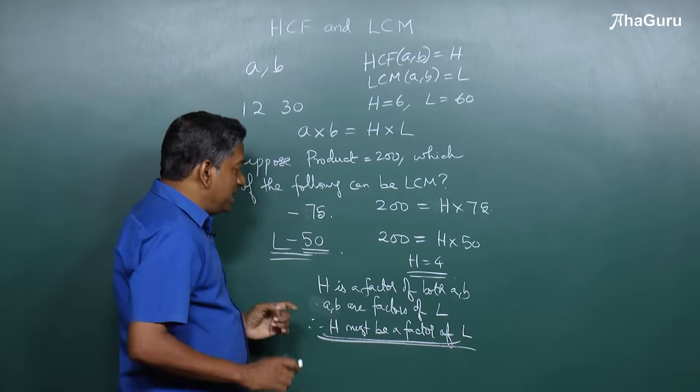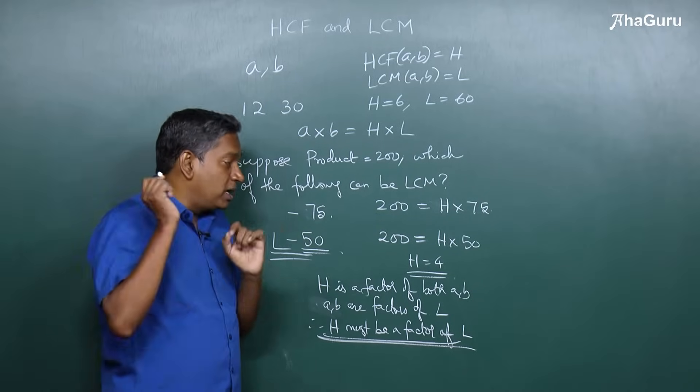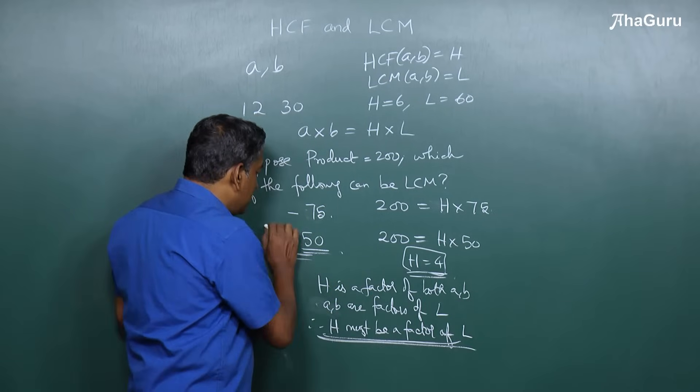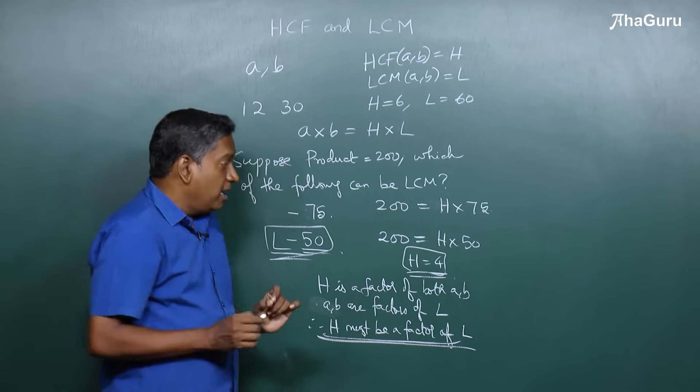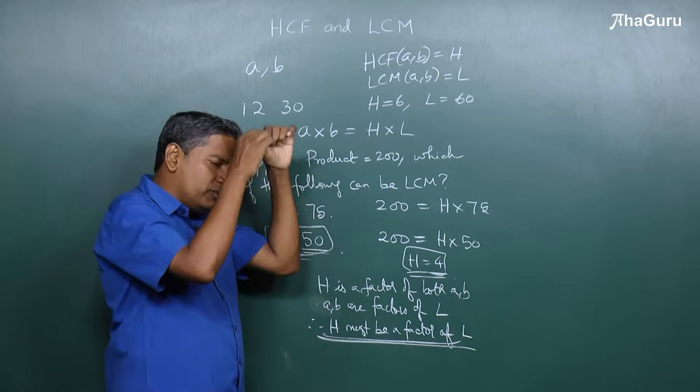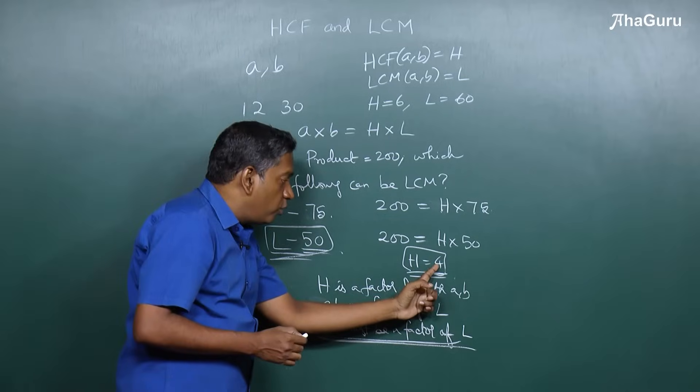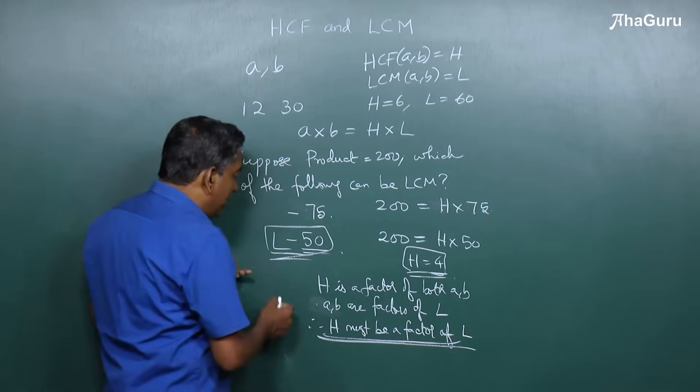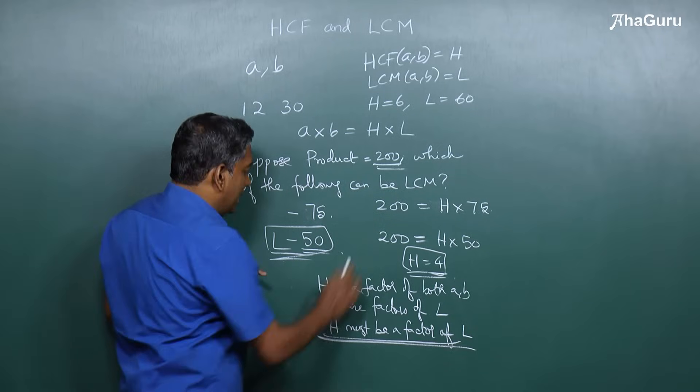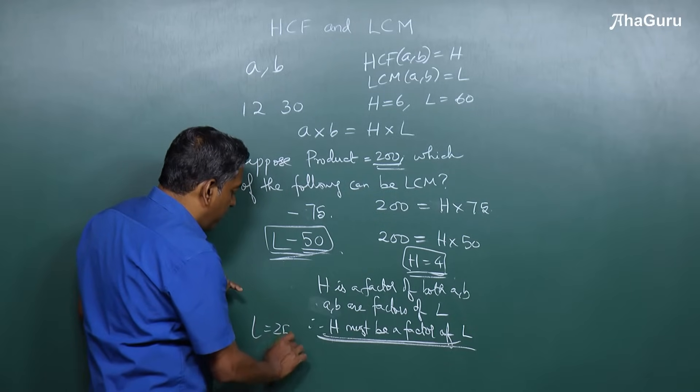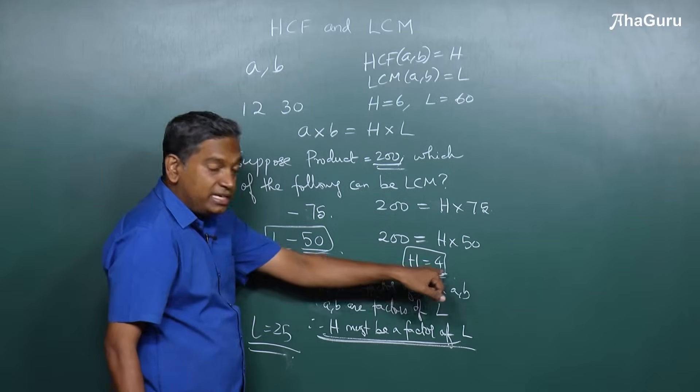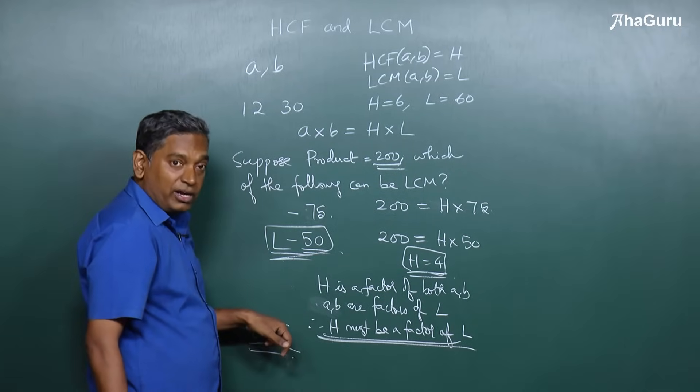This means I cannot have two numbers whose HCF is 4 and LCM is 50. Why? You don't have to try and find what they are. You won't be able to find because 4 is not a factor of 50. Similarly, if somebody told you product is 200, can the LCM be 25? Again, when you do 25 into something you will get 200, you will get 8. But 8 is not a factor of 25, so you cannot have this. So this combination is not possible.